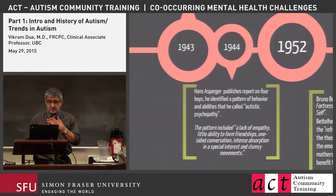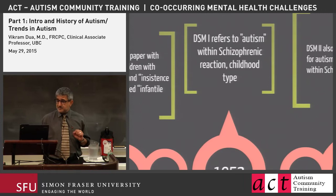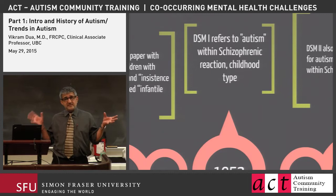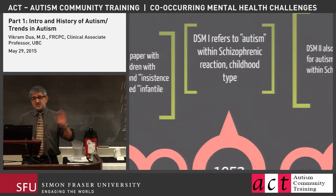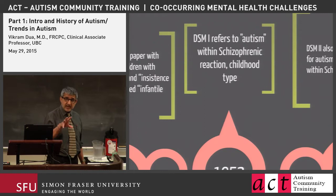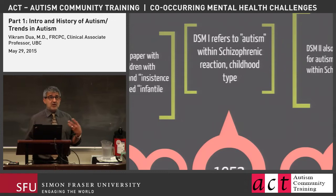Hans Asperger's work was lost for many years until rediscovered in the 70s. The first time classification systems really approached autism was in the DSM-1, which came out in the early part of the 50s. At that point, autism was included, but included within schizophrenia — seen as a childhood version called 'schizophrenic reaction.' This was the overall model that dominated the way we understood autism for a couple of decades.